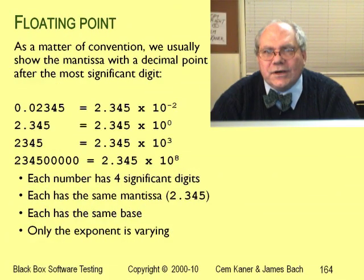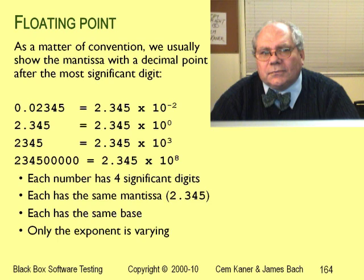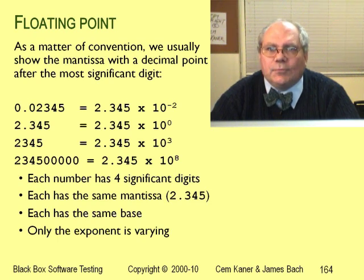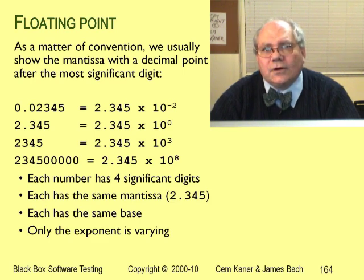To simplify how we read floating-point numbers, we use a convention. We write the mantissa with the decimal point after the most significant digit. This way, all of the differences between two numbers in their order of magnitude show up in their exponent.